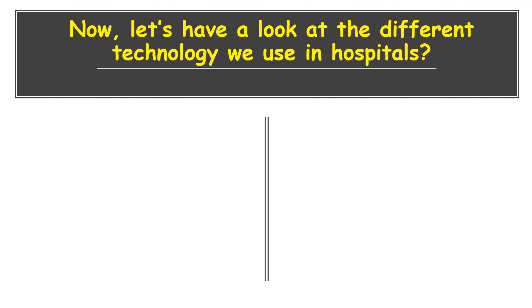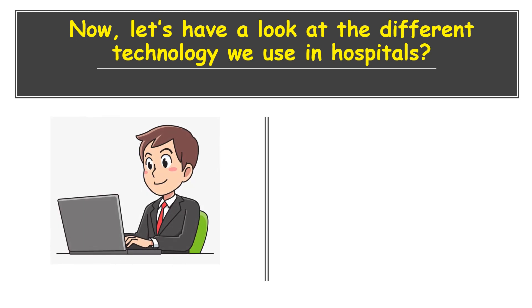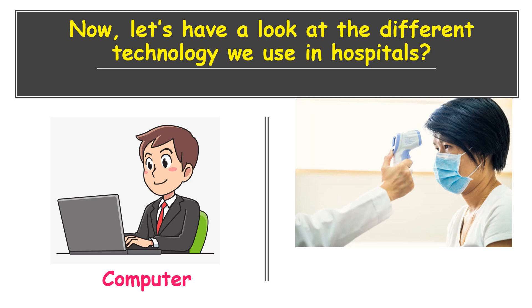Now let us have a look at the different technologies we use in hospitals. Look at this man — he is using a computer. Why does he use a computer in hospital? Because we can store data like the details of patients, appointment details, and also medicine names. And what is this doctor using here? It is a thermometer. A thermometer measures our body temperature.